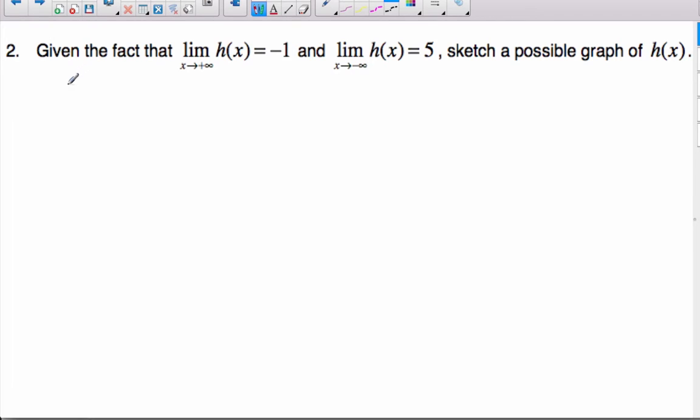So knowing that, if you're told that the limit as x goes to positive infinity of h(x) is -1, as it goes to negative infinity of h(x) is 5, sketch a possible graph for h. Go ahead, try that now, make your graph of h. I'm pausing the video, you can do it.